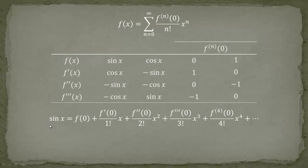Now let's write down the sine function. Sine of x equals f evaluated at 0, plus the first derivative evaluated at 0 over 1 factorial times x, and so forth — this is nothing else than the Taylor series. The second derivative evaluated at 0 over 2 factorial times x squared, and so on. The interesting part is that f of x evaluated at 0 is 0, so this term cancels. The next term is 1, and the term for x squared is 0, and for x to the 4 it is also 0.